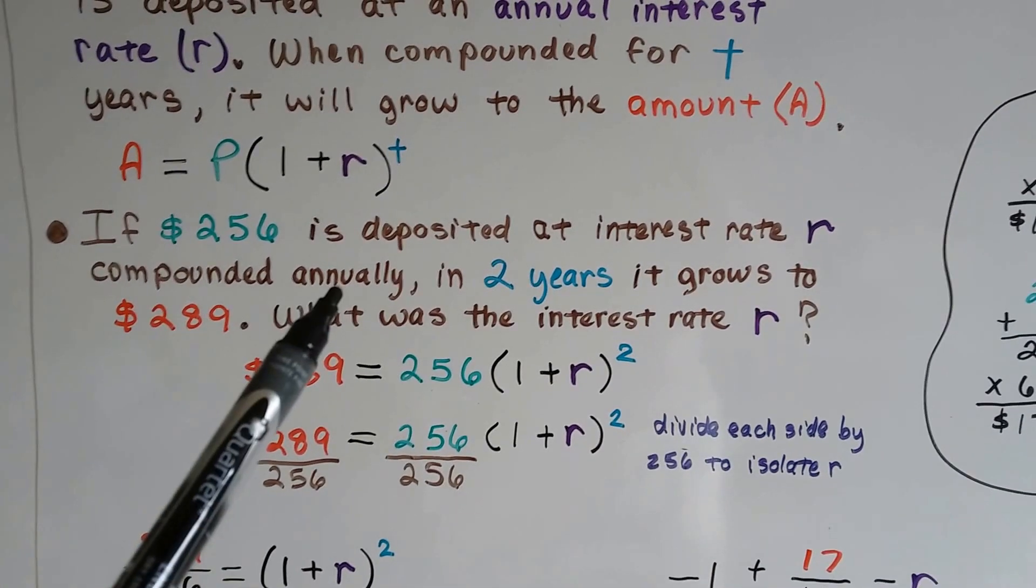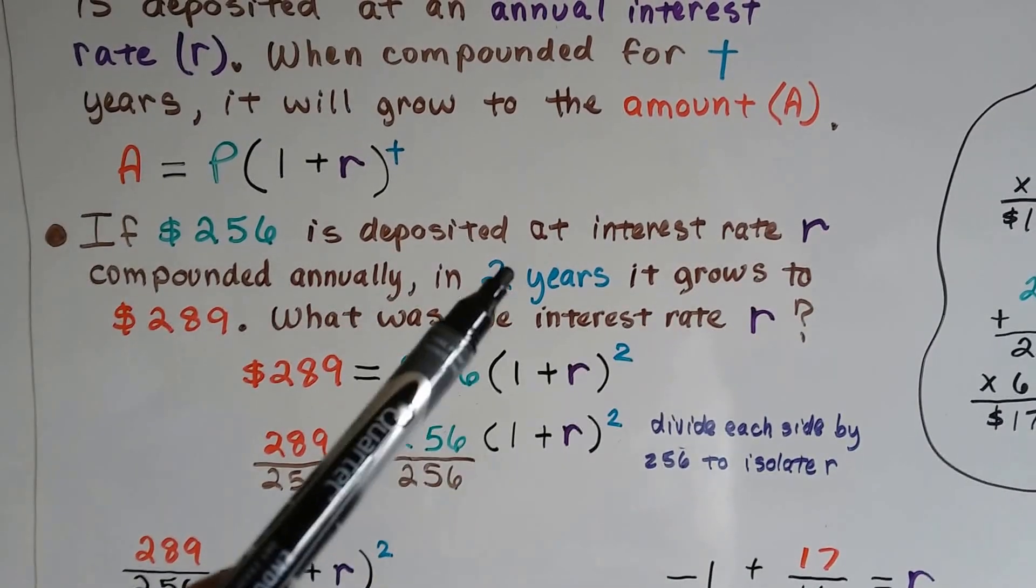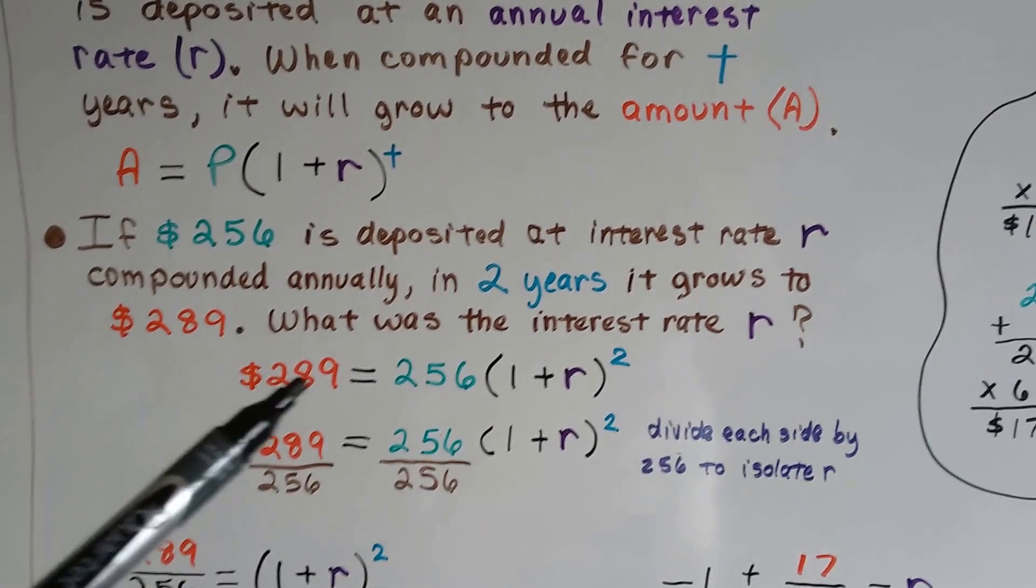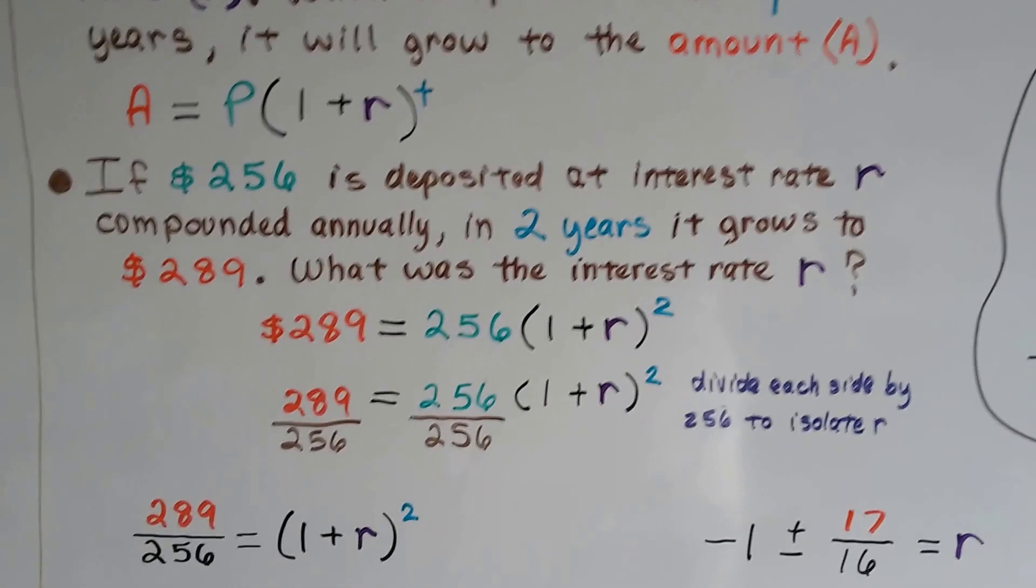Now, if $256 is deposited at some interest rate, we don't know what it is, R, and it's compounded annually in two years. See how our time was going to be a little exponent here? So that's our two. It grows to $289. So that's going to be our A. What was the interest rate R?